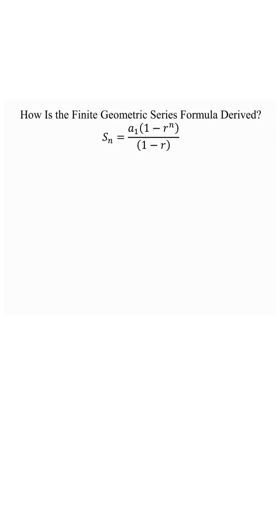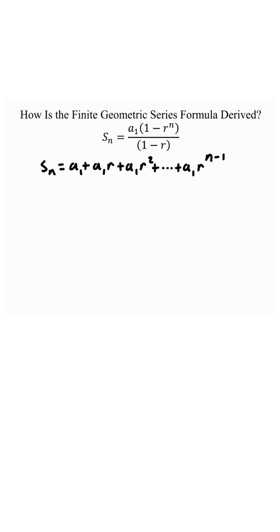How is a finite geometric series formula derived? Let's look at a geometric series, which would be S of n equals a sub 1 plus a sub 1 times the common ratio plus a sub 1 times the common ratio squared, plus dot dot dot all the way down to a sub 1 times the common ratio to the power of n minus 1.